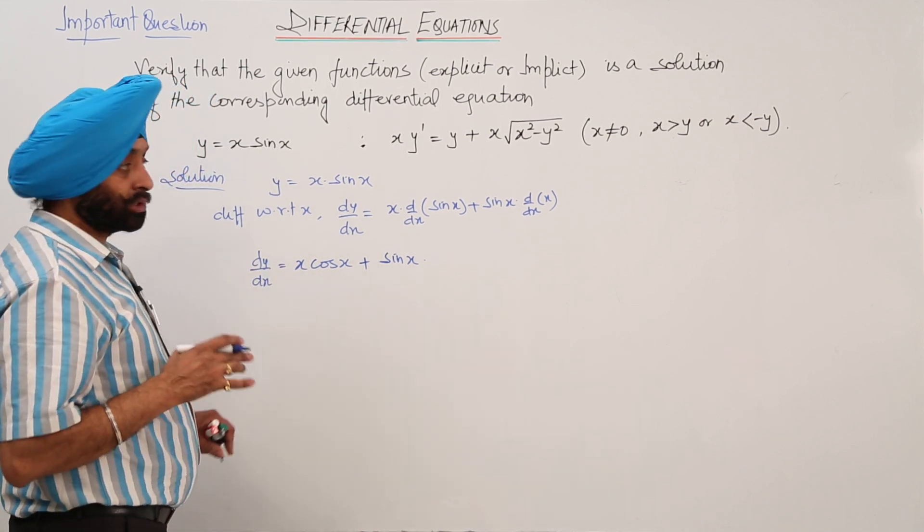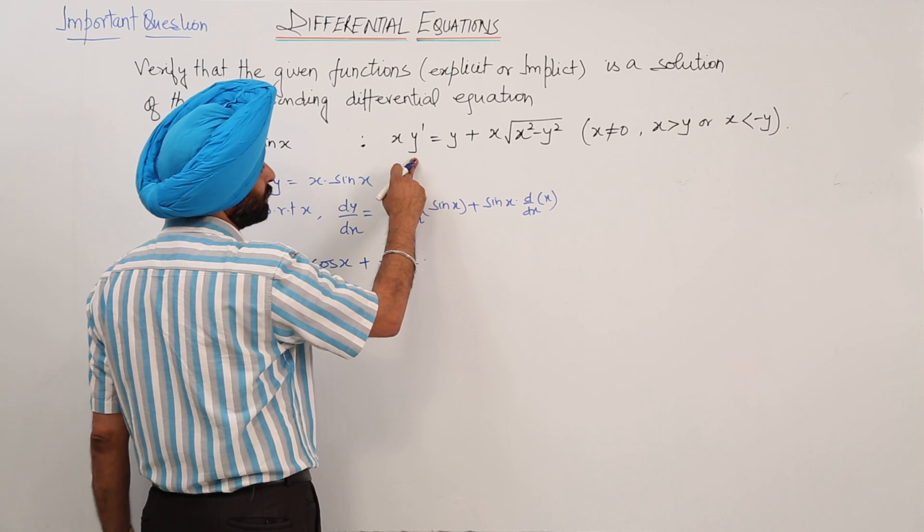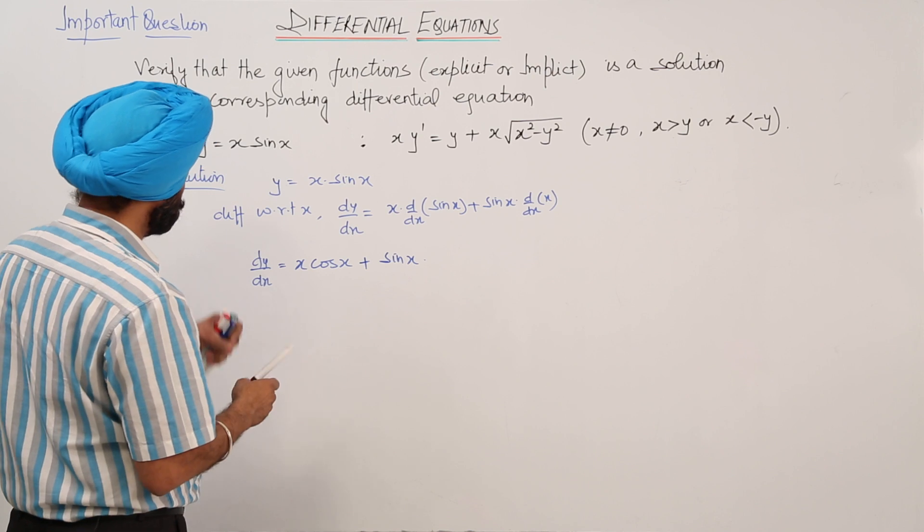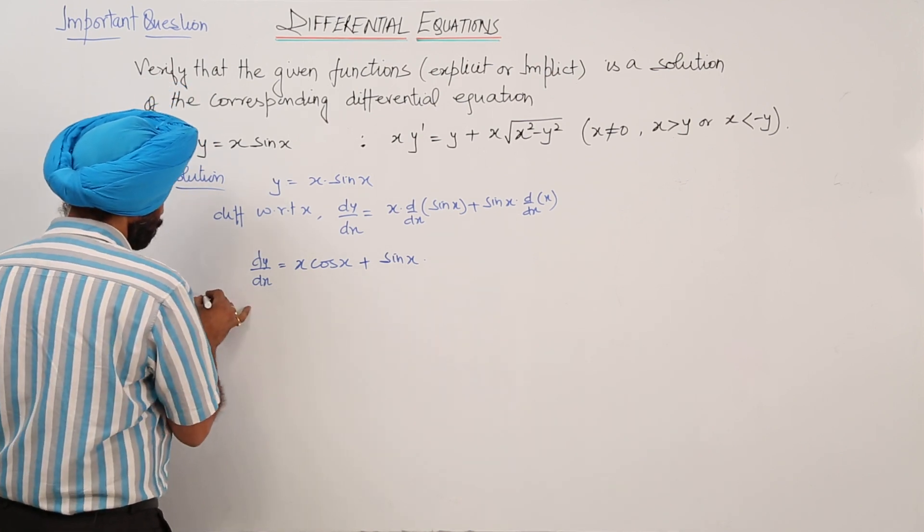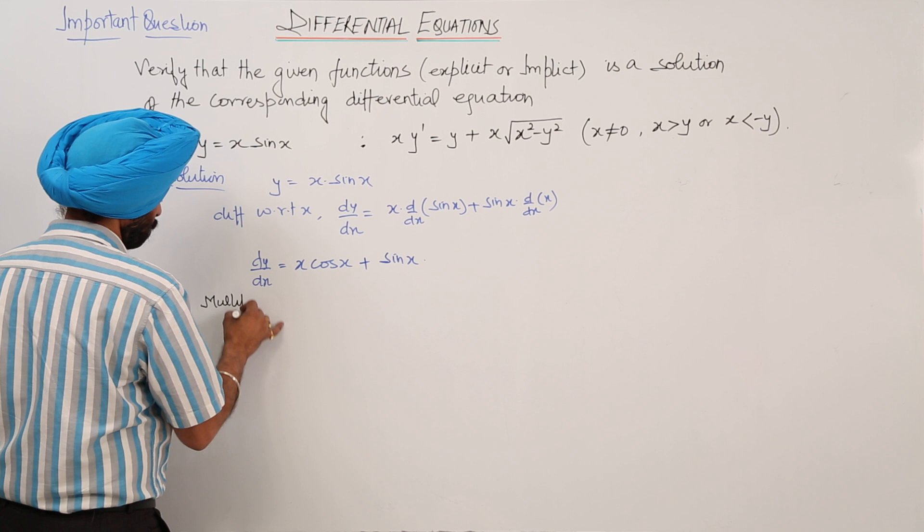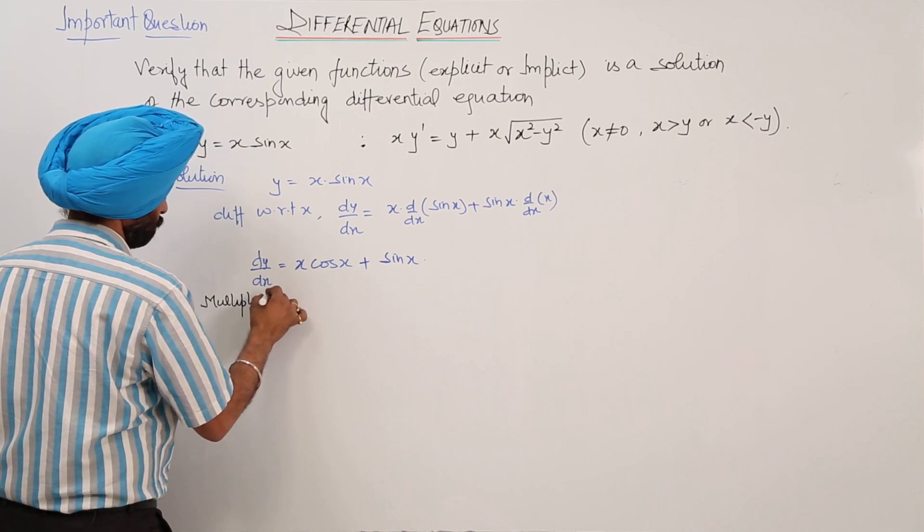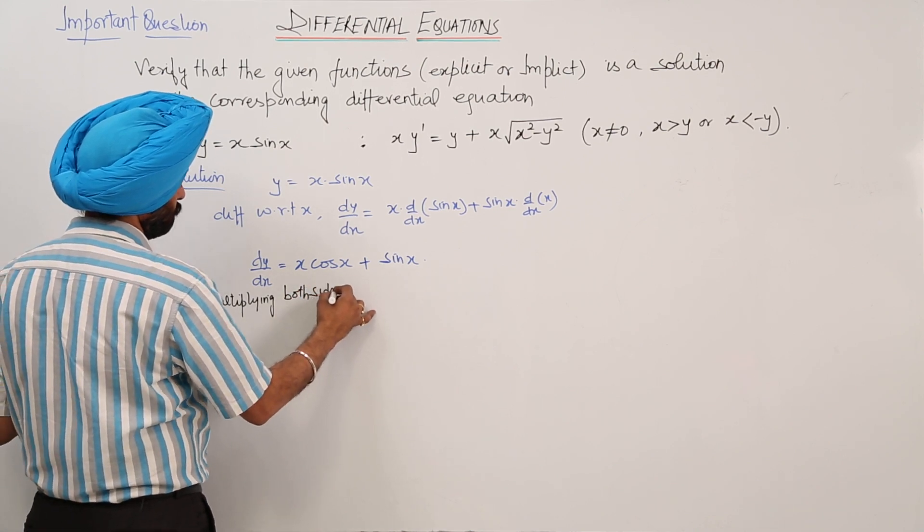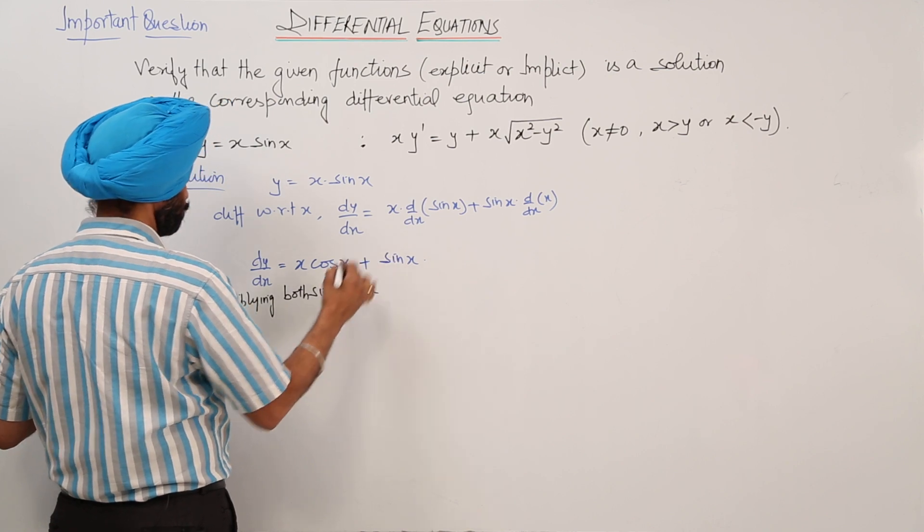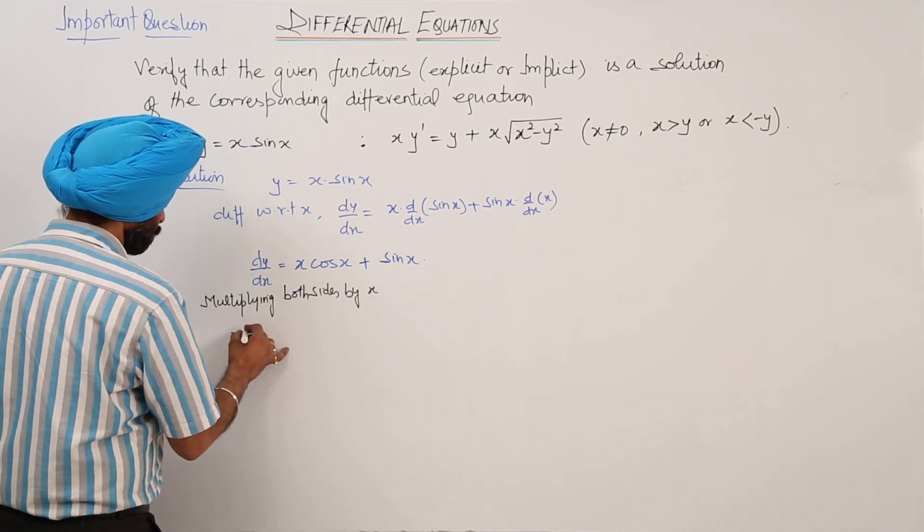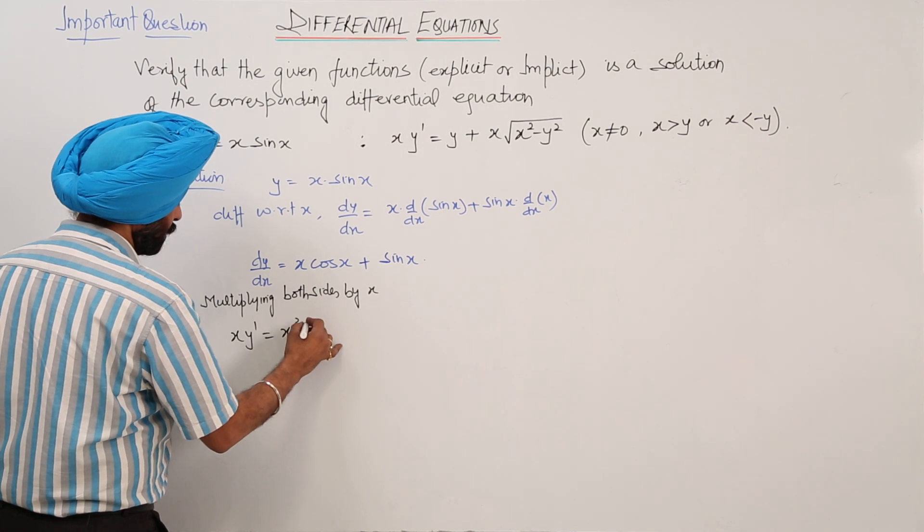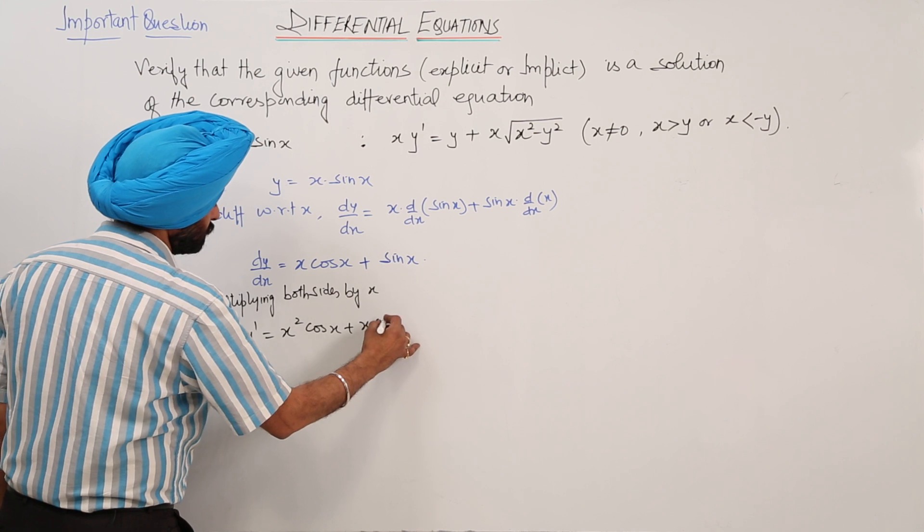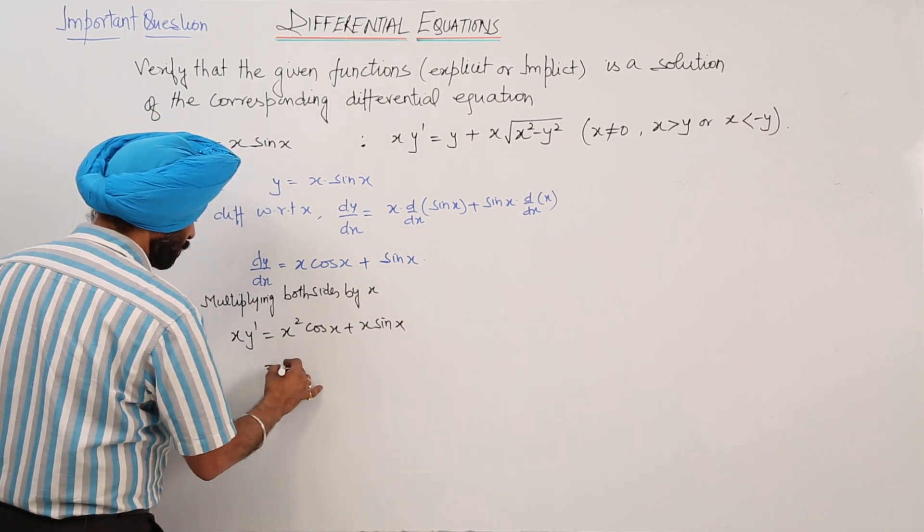Now we have two options: we can put dy/dx directly here and solve, or we can use a direct approach. Multiplying both sides by x, xy' equals x squared cos x plus x sin x.